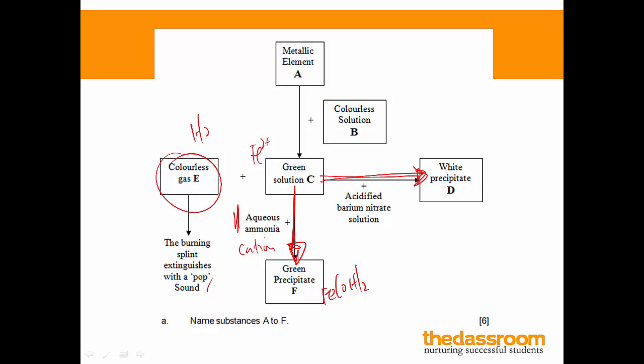Going down the right here. Addition of barium nitrate solution is a test for anion. And which anion is this? It is the test for the sulfate ion. Now, if sulfate ions are present, you will get a white precipitate of barium sulfate, which is D. And this tells you that C must contain your sulfate ion. Which means that solution C is iron 2 sulfate.